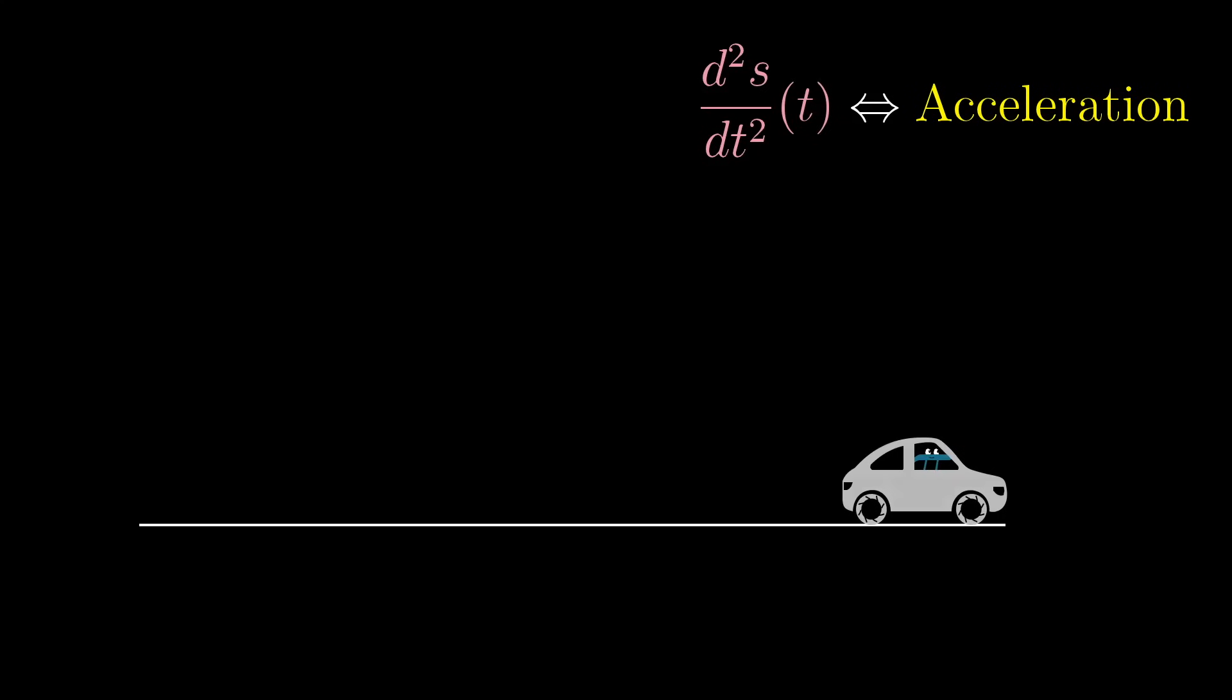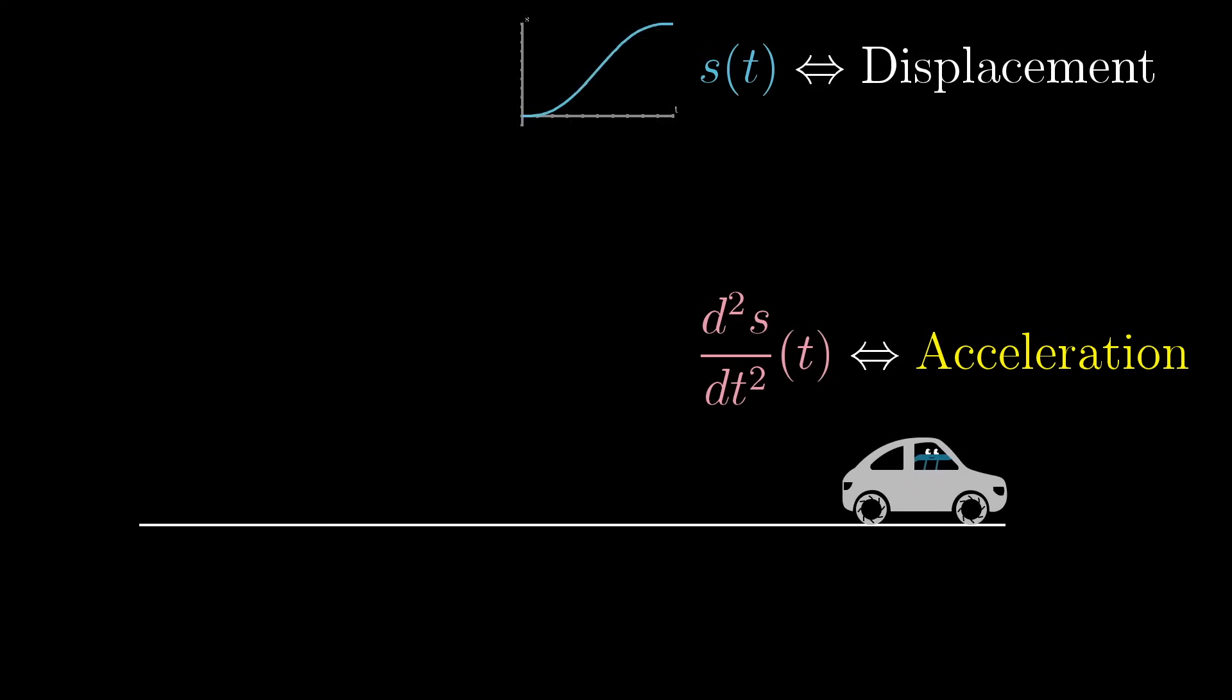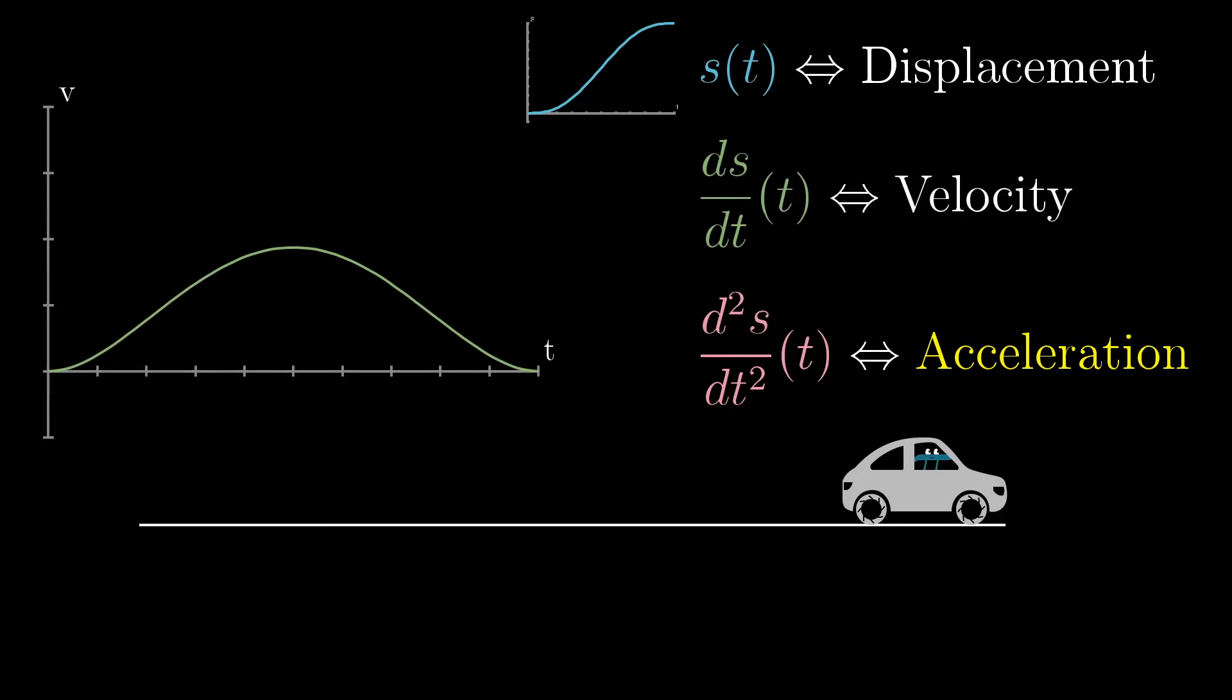Maybe the most visceral understanding of the second derivative is that it represents acceleration. Given some movement along a line, suppose you have some function that records the distance traveled versus time. Maybe its graph looks something like this, steadily increasing over time.